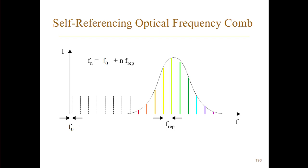And we don't know what this f-zero is, and this can also vary over time. So if we want to know the frequency of the nth mode up here, we know we can easily work out what n is, we know what f-rep is, but we don't know what f-zero is. So the trick now is to try and work out what is f-zero.